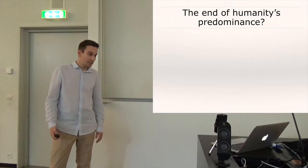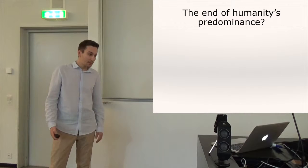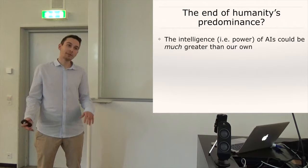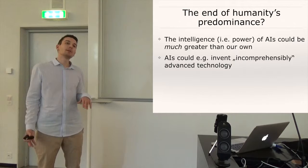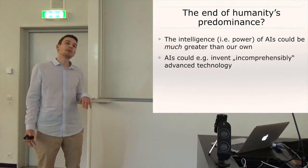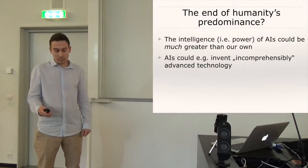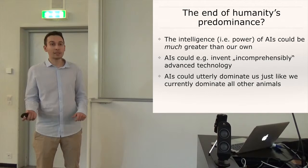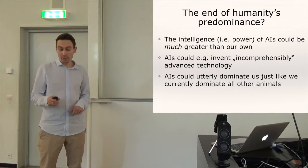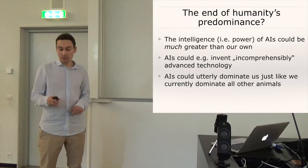Okay, so let's say we assume that or we believe that the intelligence of AIs and thereby their power could be much greater than that of humans. We have to ask ourselves that this amounts then to the end of the predominance of homo sapiens on this planet because one example AIs could just invent for example weapons which are as incomprehensible to us as for example nuclear bombs are to chimpanzees. And so just as we now currently dominate all animals just because we just have the power to do so, AIs could dominate us if they want to and if they would only be half as bad as we or if they would treat animals only half as bad as we treat animals right now then our future isn't exactly rosy.